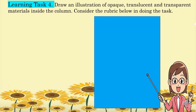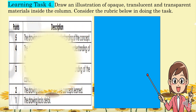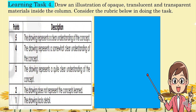For Learning Task 4, draw an illustration of opaque, translucent, and transparent materials inside each column. Consider the rubric: five points if the drawing represents a clear understanding of the concept; three points if it represents a quite clear understanding; two points if the drawing does not represent the concepts learned; and one point if the drawing lacks detail.